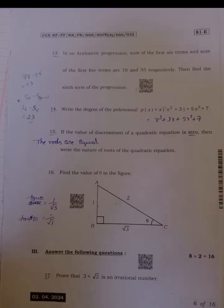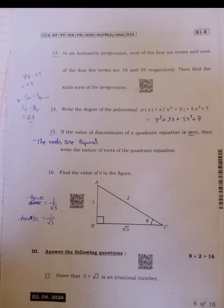Thirteenth, in an AP sum of first 6 terms and the sum of first 5 terms are 78 and 55 respectively, then find 6th term of AP. Here Sn minus Sn minus 1, that gives S6 minus S5, that is equal to 78 minus 55 gives 23.